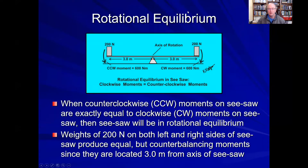The rotational equilibrium of a seesaw is important because it easily describes the concepts of masses and moment arms causing moments. Here we have a seesaw with a 200 Newton mass on the right side and a 200 Newton mass on the left side, each at a three meter moment arm, producing a 600 Newton meter clockwise moment on the right and a 600 Newton meter counterclockwise moment on the left. These equal and opposite moments produce rotational equilibrium, with the seesaw board perfectly level and not moving.